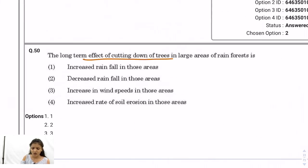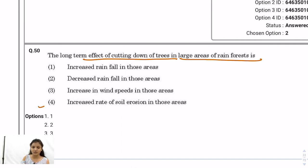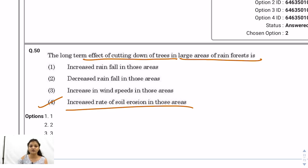Question 50: The long-term effect of cutting down trees and large areas of rainforest — where trees are cut, soil erosion increases significantly. So option 4 is the correct answer: it increases the rate of soil erosion. With this, the analysis of Paper 1 held on 25 June 2019 is complete. If anyone has the answer key, please share it for a better analysis. Follow us, like, share this video, subscribe to our channel, and message us on the Telegram group for queries. Thank you.